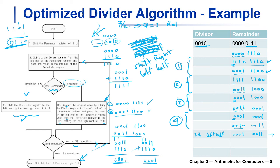Now we're done. The remainder register contains both the quotient and the remainder. The right half is the quotient and the left half is the remainder. We were expecting a remainder of 1 — correct. We were expecting a quotient of 3 — also correct.